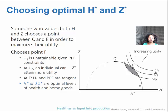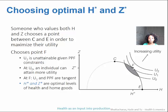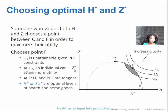U2 represents what is beyond the production possibility for the individual, so it's not possible. Point F — that tangential point between the outside of the production possibilities curve and the indifference curve — will be the optimal level for H and for Z. So H* and Z* represent the optimal levels of health and of non-health utility producing activities for this individual.